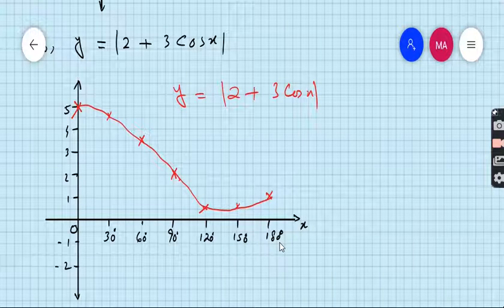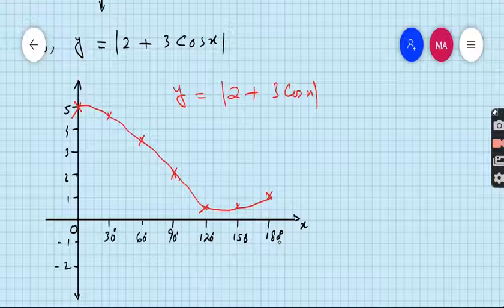Here we go. We have the portions which are below the x-axis reflect to positive x-axis. That is it.